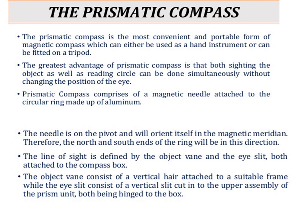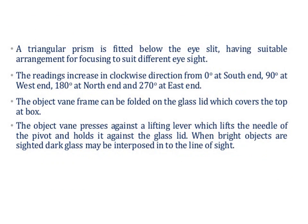The line of sight is defined by the object vane and the eye slit, both attached to the compass. The object vane consists of a vertical hair attached to a suitable frame, while the eye slit consists of a vertical slit cut into the upper assembly of the prism, both being hinged to the box. A triangular prism is fitted below the eye slit with suitable arrangement for focusing to suit different eyesight. The readings increase in clockwise direction from 0 degree at south end, 90 degree at west end, 180 degree at north end, and 270 degree at east end — these are the graduations marked on the graduated disk.